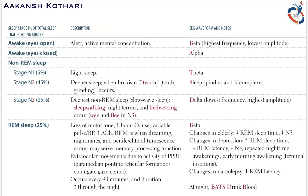In rapid eye movement sleep there is loss of motor tone, meaning the person is not motorically active, and there is increased brain oxygen use. There are variable pulse and blood pressure. An important feature is increased acetylcholine levels. REM sleep is a phase of dreaming, nightmares, and penile or clitoral tumescence, lasting 25% of total sleep.